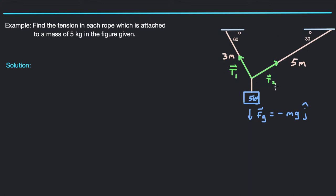Or T1 plus T2 plus Fg should be equal to zero. So we're going to try to find tension 1 and tension 2 in this example. So first thing we write up here, we go like T1 — tension 1 — that's the force in this rope that is countering the force due to gravity. So that's going to be probably larger than T2 because it's closer to being almost vertical.